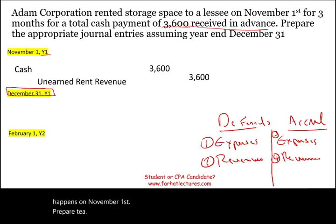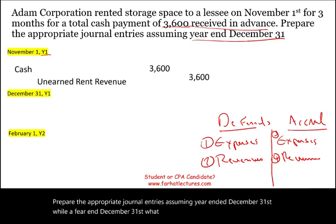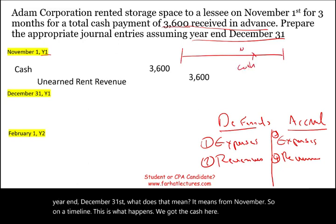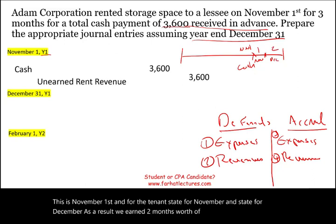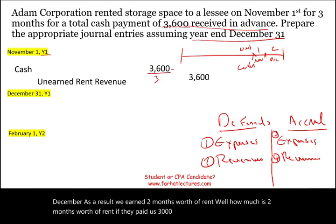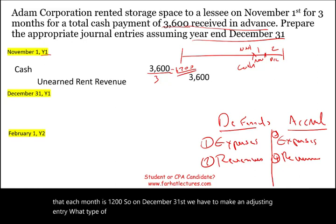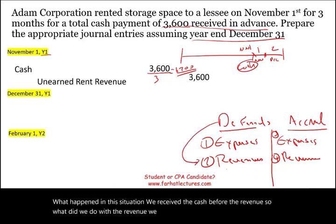Now prepare the appropriate journal entries assuming year-end is December 31st. On a timeline, we received the cash on November 1st, and the tenant stayed for November and December. As a result, we earned two months' worth of rent. If they paid us $3,600 for three months, each month is $1,200. So on December 31st, we have to make an adjusting entry. In this situation, we received the cash before the revenue, so we deferred the revenue — this is a deferral of revenue.